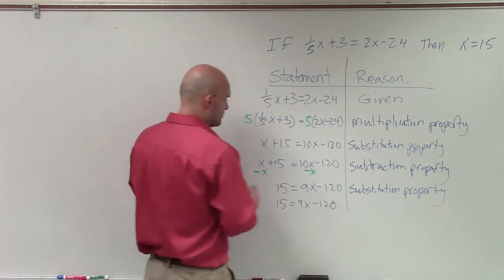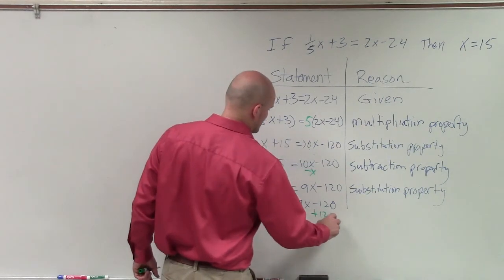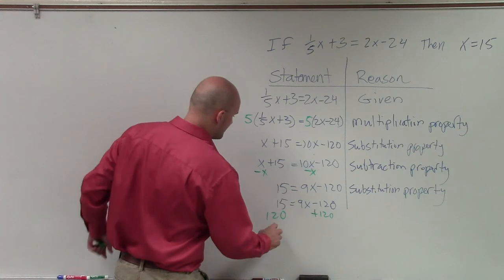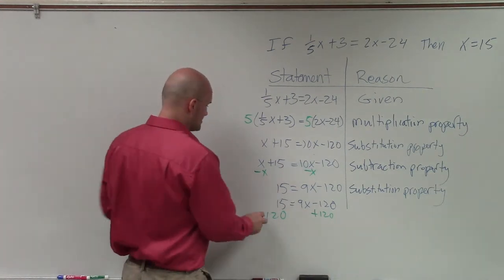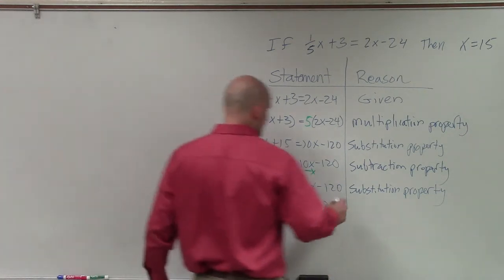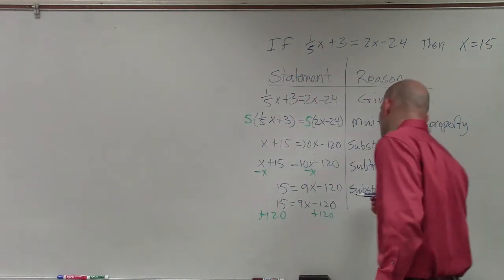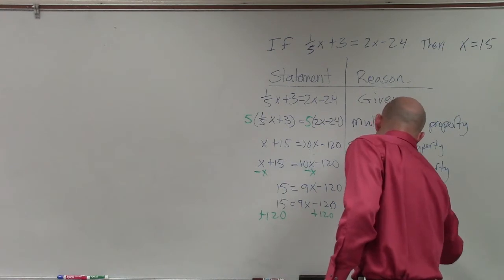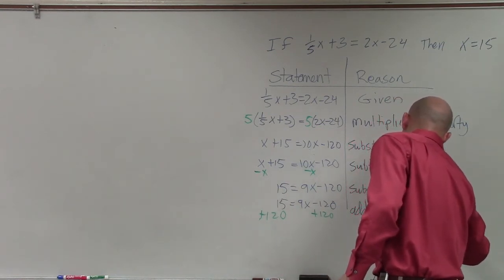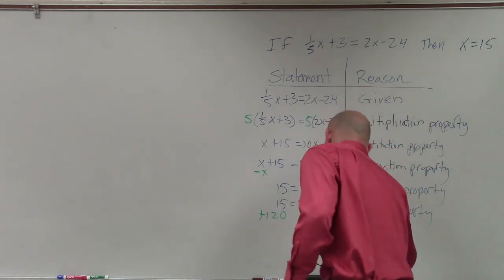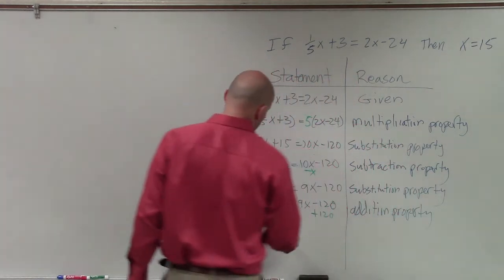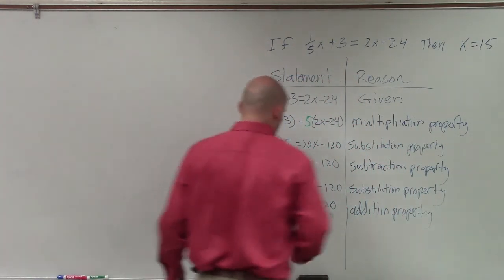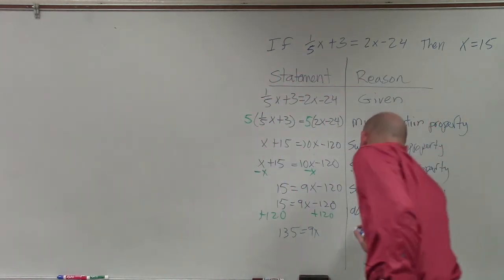So 15 equals 9x minus 120. So now I'll add 120 to both sides. So therefore, I have... Well, so if I'm adding on both sides, we'll call that the addition property. And when adding 120, you now get 135 equals 9x, which is, again, now a substitution.